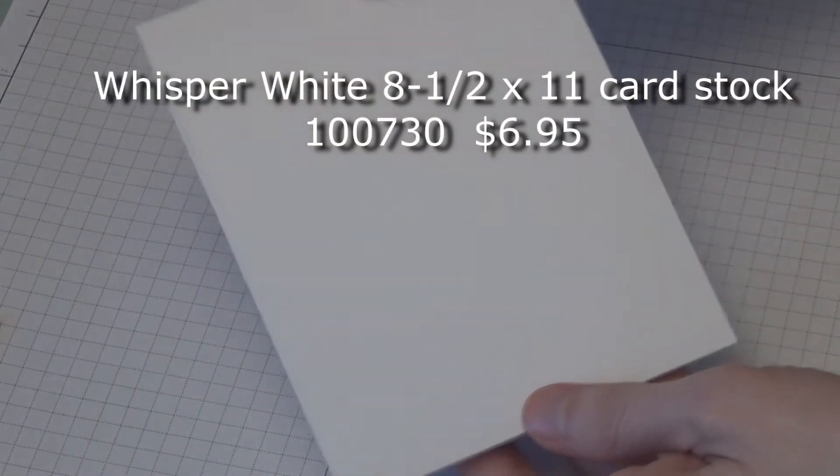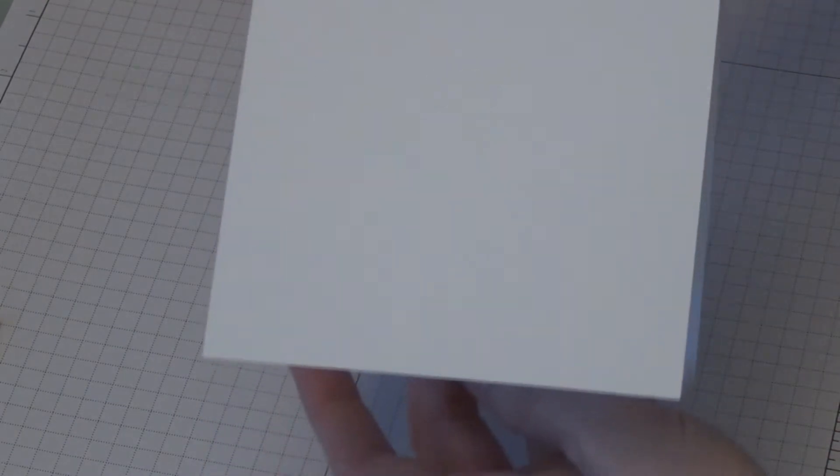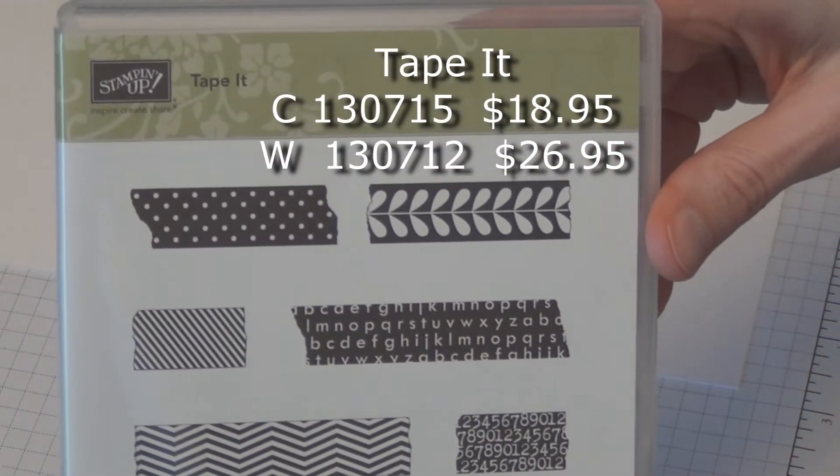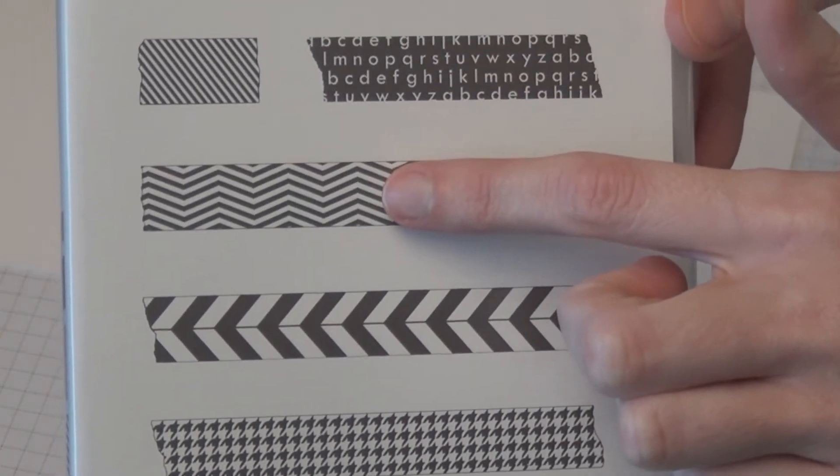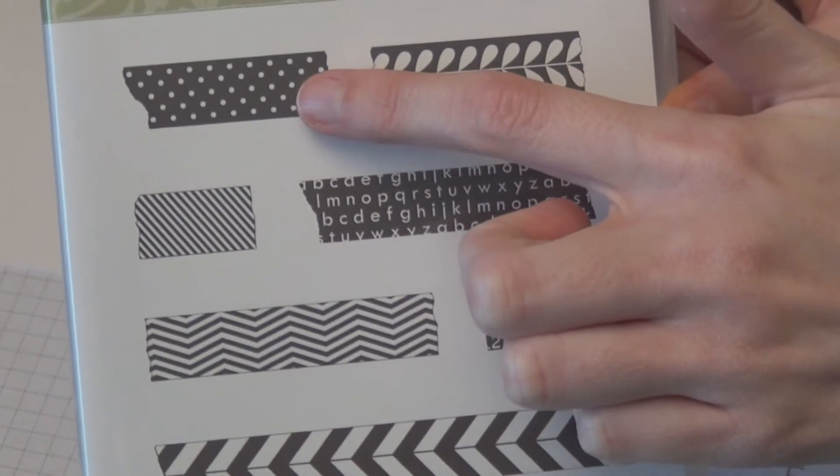I have Whisper White, an A2 card, and I have this longways. It's going to open like that. I am using the Tape It set. I am using the little chevron and the polka dot.